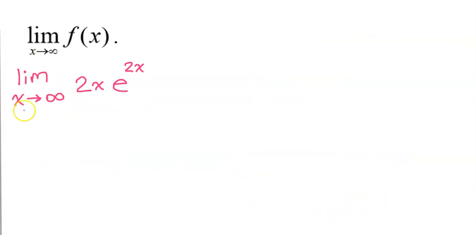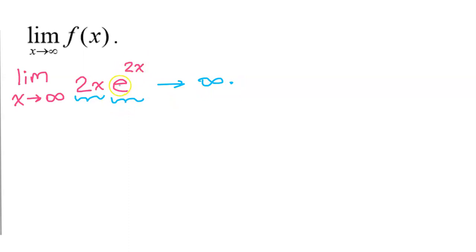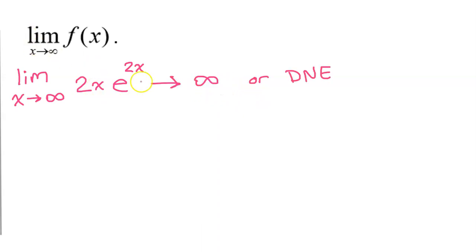We still need to talk about the limit as x approaches positive infinity. This is easy: if x is approaching infinity, then 2 times x is also approaching infinity, and e to the 2x is like e to the infinity, which approaches infinity. So basically we are looking at infinity times infinity, which is just infinity — or we can say that the limit does not exist.